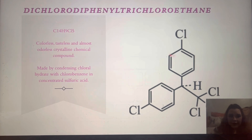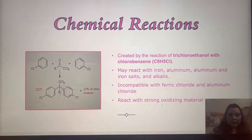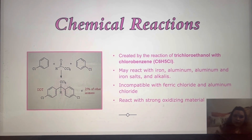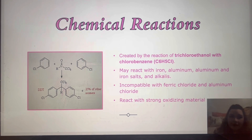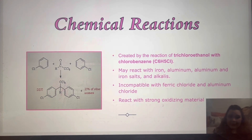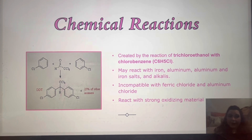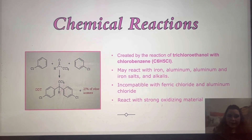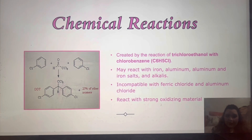The structure shown here is what the compound looks like when it's all put together. DDT itself is a chemical reaction — it's created by the reaction of trichloroethanol combined with chlorobenzene. It can react to iron, aluminum, salt, and alkalis.